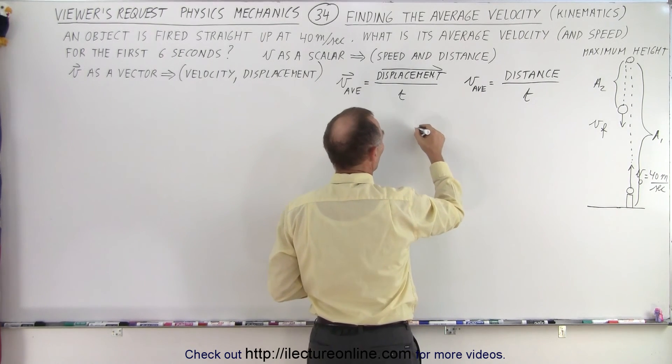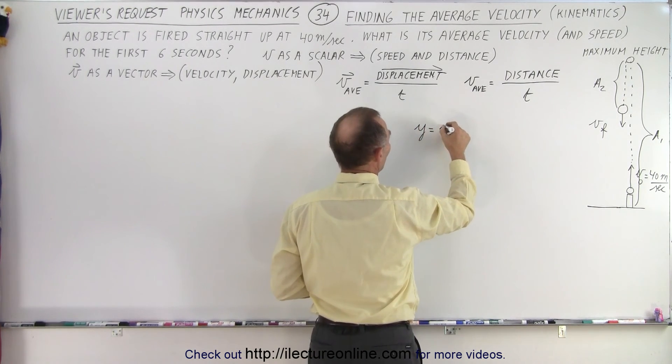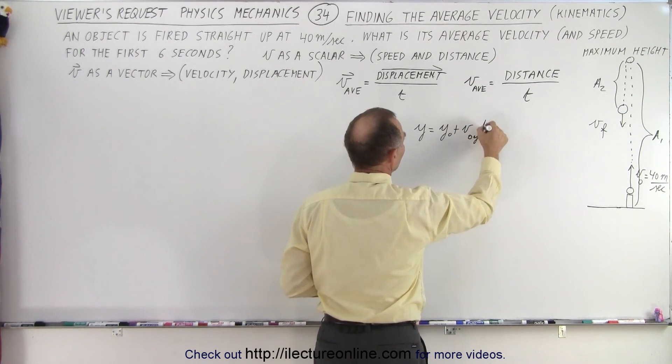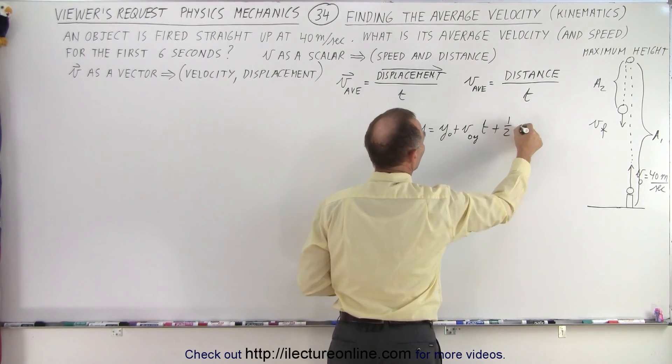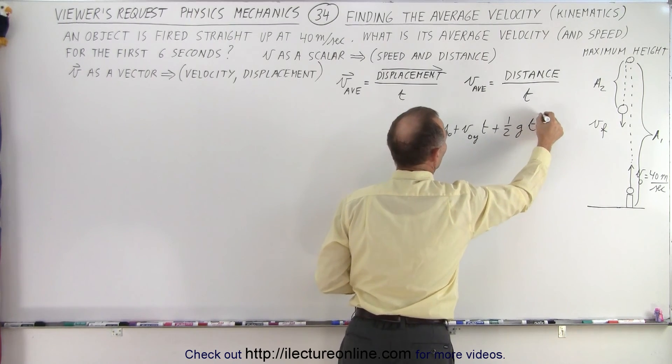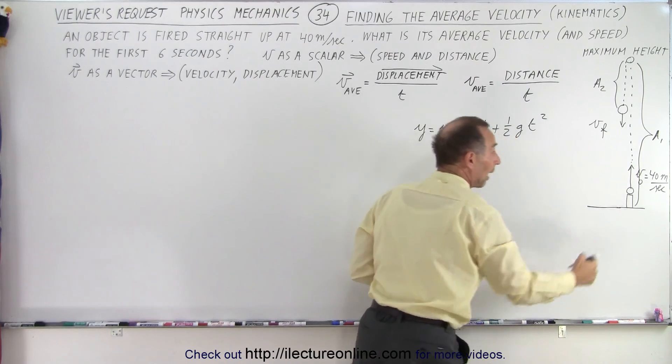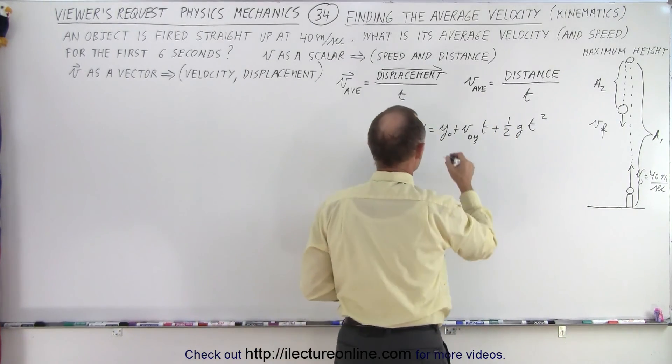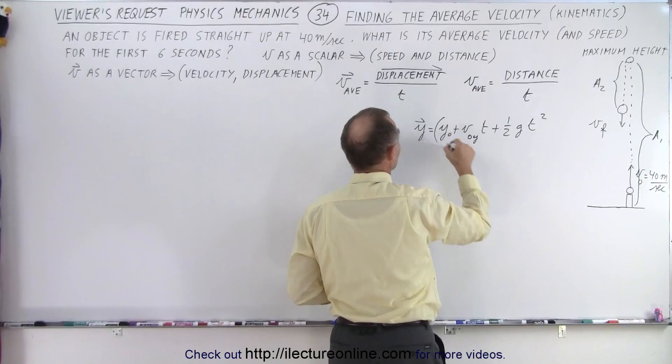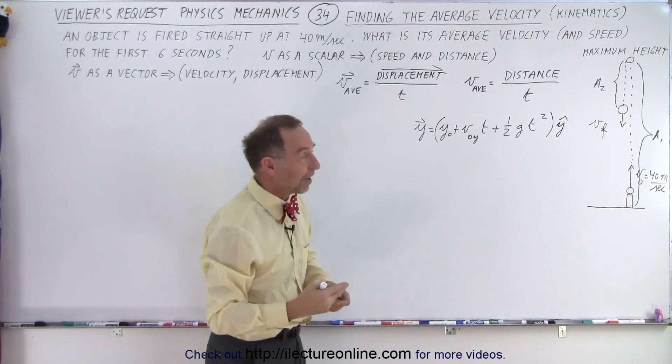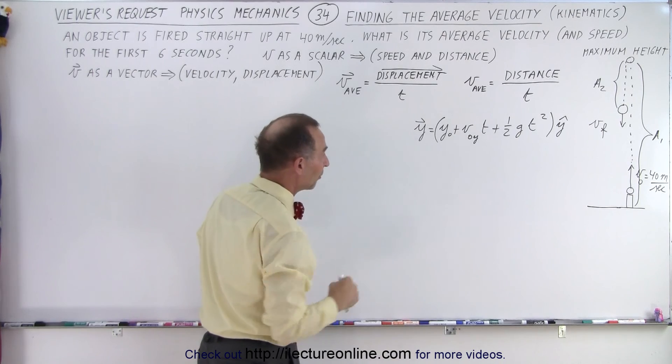So the displacement y is going to be equal to y sub naught plus v sub naught in the y direction times time plus one-half g t squared. So that will give us the final position relative to the ground, and then if we take that and put a vector on that, we can then go ahead and write it like that, meaning it will have a positive value pointing straight up from the ground.